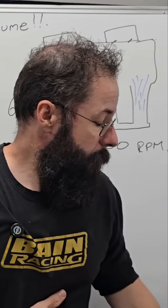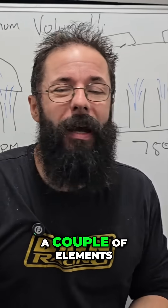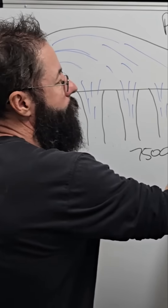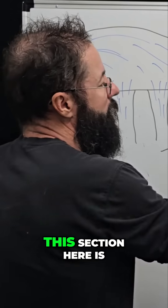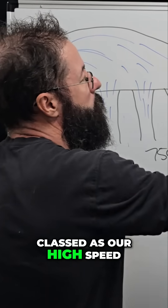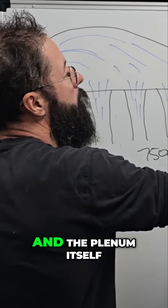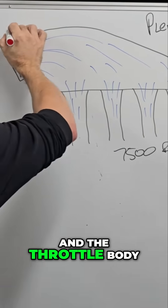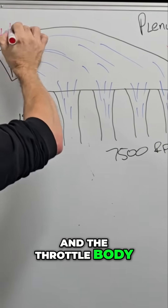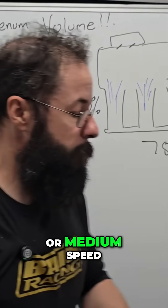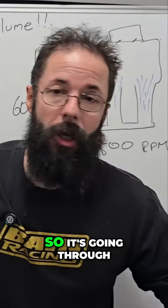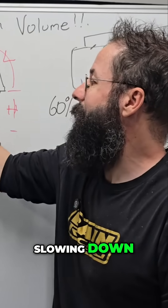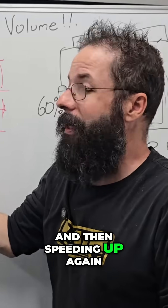We have a couple of elements we have to separate. This section here is classed as high speed, and the plenum itself is low speed, and the throttle body may be high speed or medium speed. So air is going through the throttle body, slowing down, and then speeding up again.